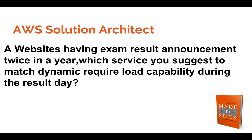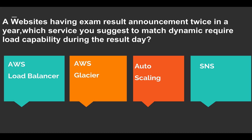The next question: a website announces exam results twice a year and experiences dynamic load spikes on result days. Which AWS service would you suggest to match dynamic load capacity during those days? The options are: load balancer, Glacier, Auto Scaling, and SNS. Write your answer in the comments.